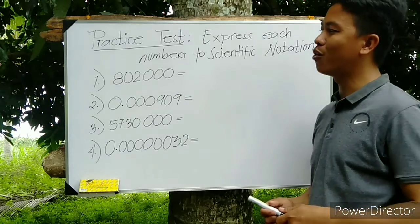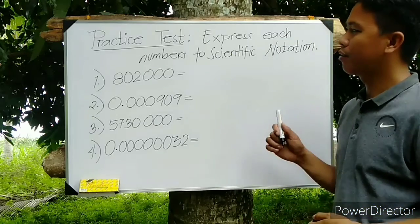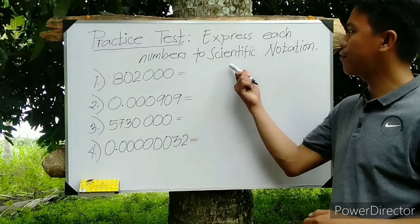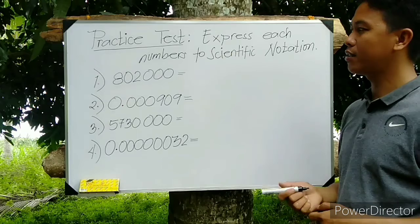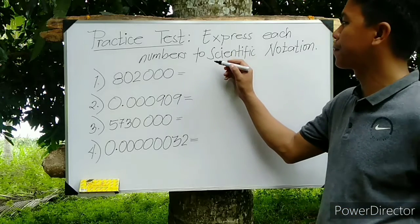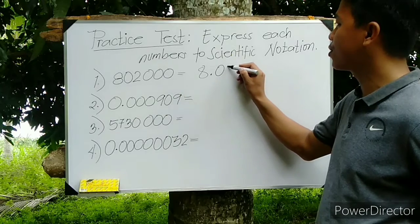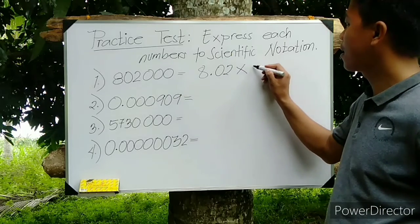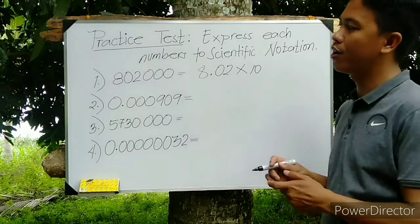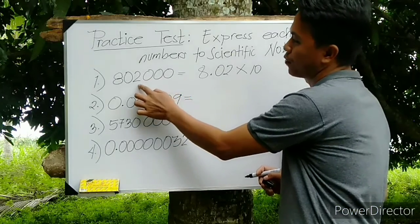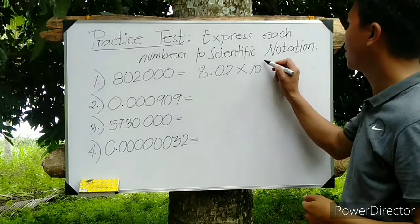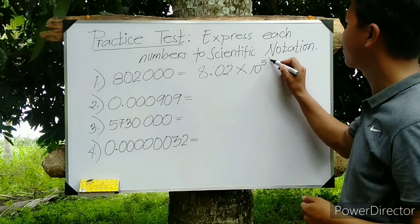Let's start with number 1. So how can we convert that into scientific notation? The answer for that is 8.02 times 10 to the power of 1, 2, 3, 4, 5—positive 5.